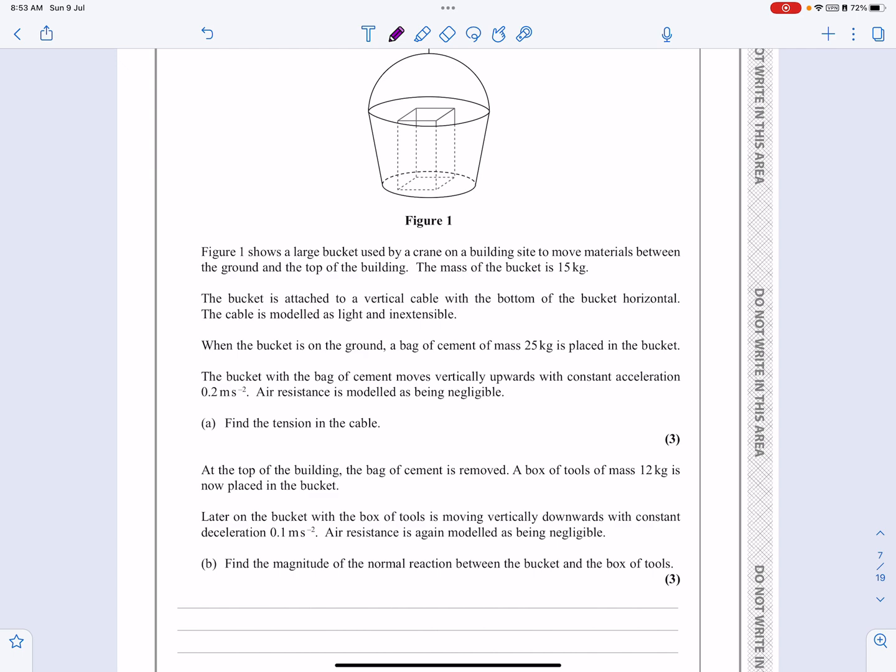Figure one shows a large bucket used by a crane on a building site. Mass of the bucket is equal to 15 kilograms. It's attached to a cable. And when the bucket is on the ground, a bag of cement of 25 kilograms is put in the bucket. Bucket plus the bag moves vertically upwards with a constant acceleration 0.2. Air resistance is modelled as being negligible.